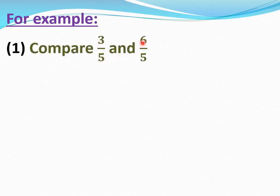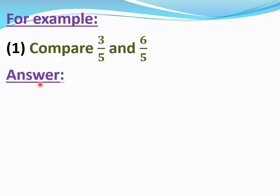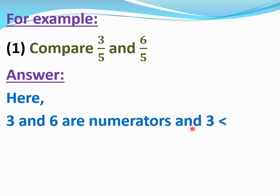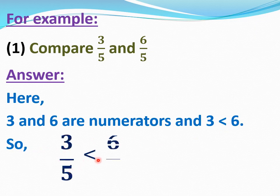For example, question number 1: compare 3 by 5 and 6 by 5. We have to compare 3 by 5 and 6 by 5. See, 3 by 5 and 6 by 5 are like fractions, so first we will compare their numerators, that is 3 and 6. Here 3 and 6 are numerators and 3 is less than 6. So 3 by 5 is less than 6 by 5.